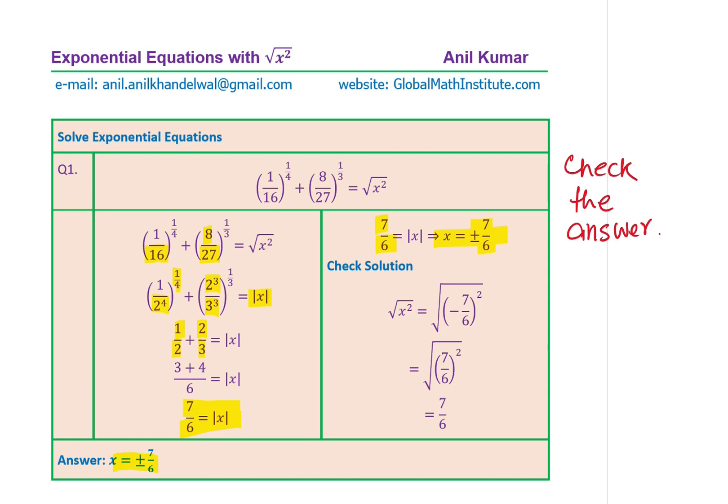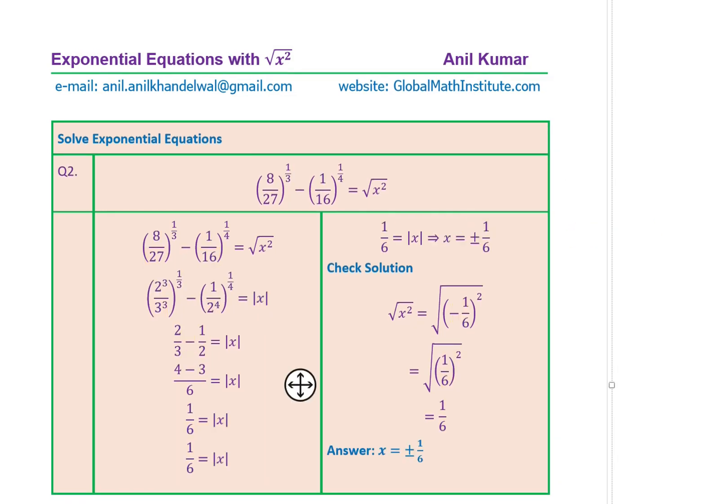Let me check with minus seven over six. When we take minus seven over six and square it, it becomes positive seven over six squared, and the square root is always positive, so we do get seven over six as expected. Therefore both the positive and negative solutions work. I hope that is absolutely clear.